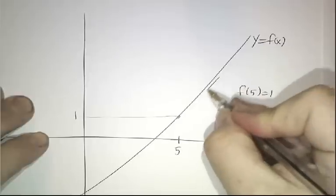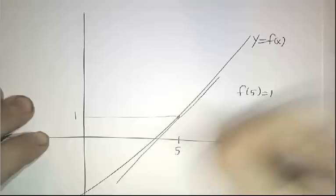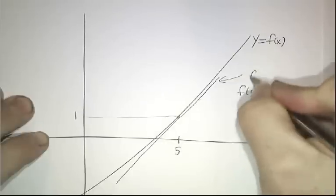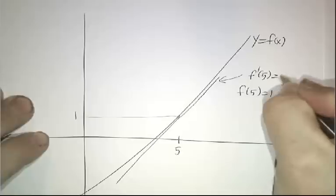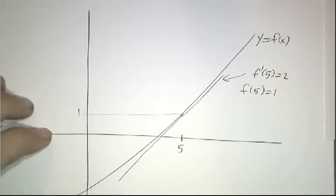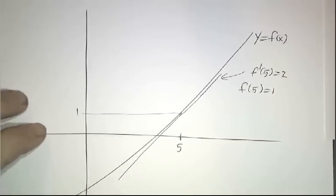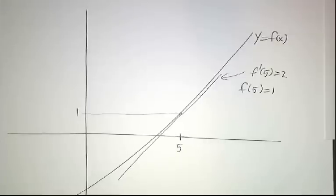And let's suppose that f of 5 equals 1. And let's suppose that the derivative here, the derivative at 5, let's suppose that's 2. Can you give me a good guess of what f of 6 is, or what f of 4 is, or what f of 3 is?